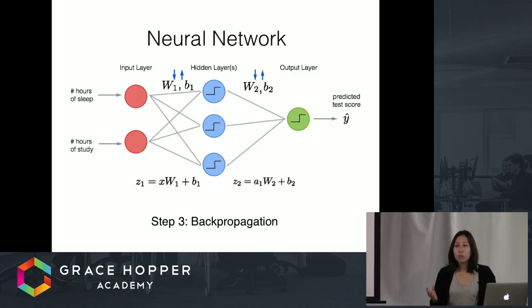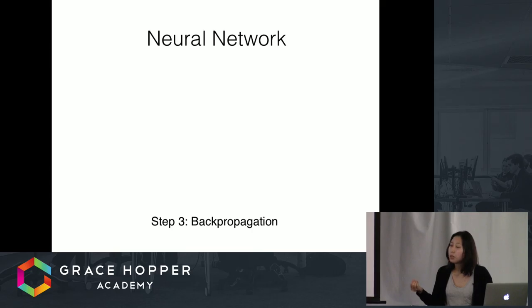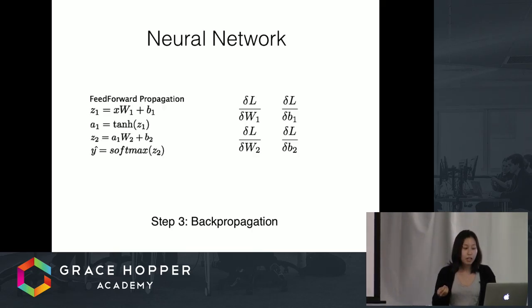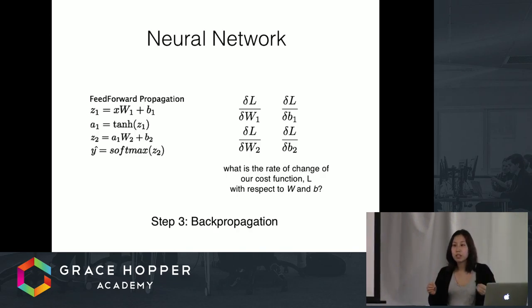To do that, what can we adjust in this neural network? Well, we don't want to adjust the input values or the output values—those are predetermined. The things that we are able to adjust are the weights and biases. So what we do is we need to compute the derivatives of them.